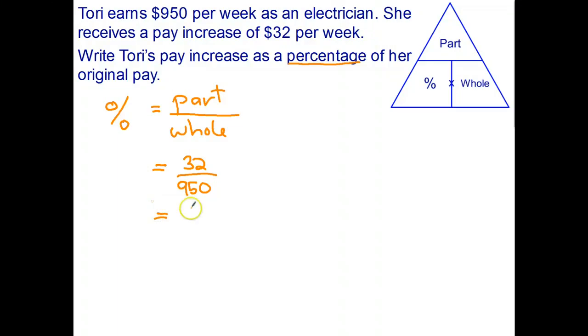And I've got lots of decimal places here. I'm going to write down four of them. So 0.0336. I haven't rounded any of those. I'll be doing my rounding shortly.